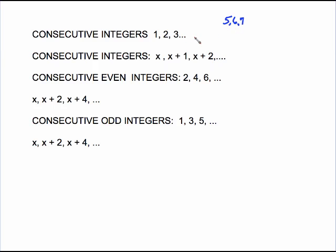What separates these consecutive integers is a step of 1. To get from 5 up to 6, we would add 1. To get from 6 up to 7, we would add 1.